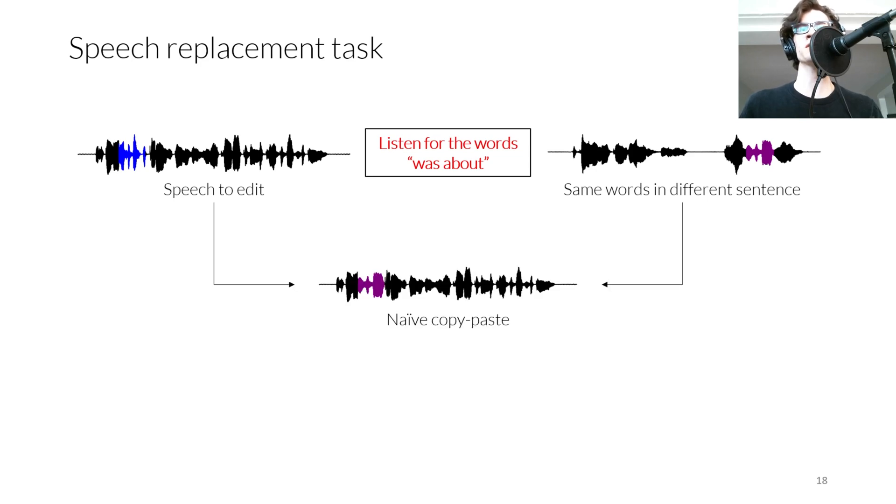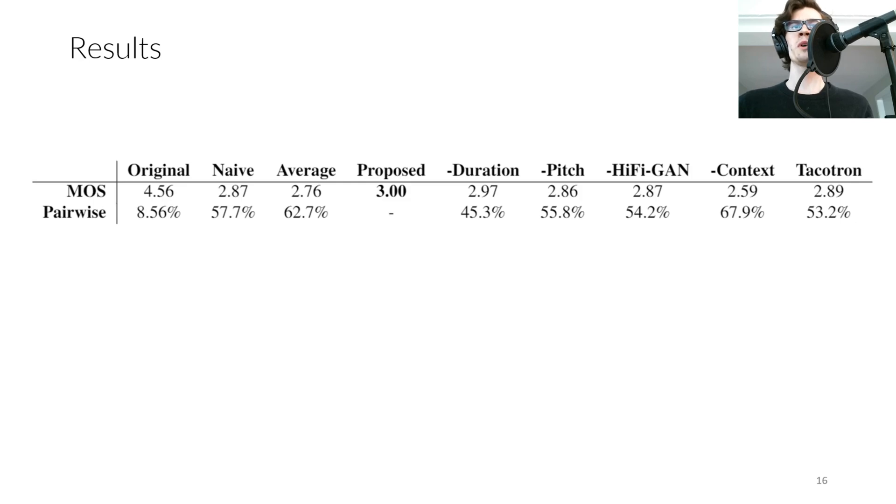Next, we naively copy-paste the phrase was about from the second sentence to the first. Here's what that sounds like. The steamer was about to put on steam again when I called out to them that they had forgotten to pay me. Finally, we correct the prosody using our proposed method or a baseline method. For example, here is the result when using our proposed method. The steamer was about to put on steam again when I called out to them that they had forgotten to pay me. We perform a mean opinion score test asking participants to rate the naturalness of the speech under various conditions from one being the worst to five being the best. We also perform a pairwise test asking participants to select whether our proposed method sounds more natural than each other method.